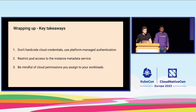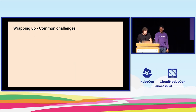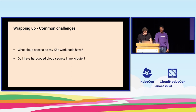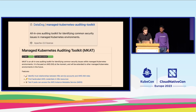We're releasing a new tool called the Managed Kubernetes Auditing Toolkit — MCAT. It's a single binary you can install easily, and for now it supports EKS. There are a lot of tools to audit your cloud and a lot to audit Kubernetes, but there's a gap in the middle when you want to find cloud-specific issues in Kubernetes clusters. The idea is to address exactly that gap.